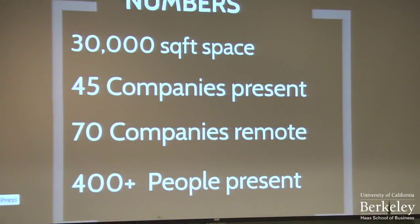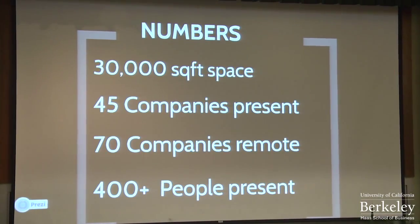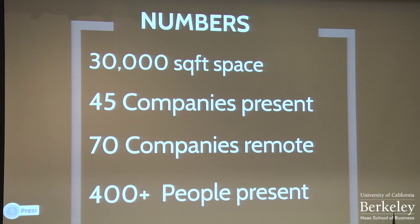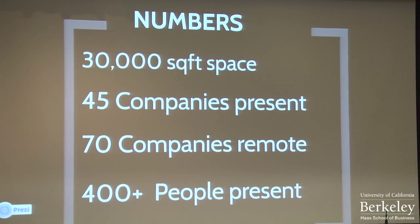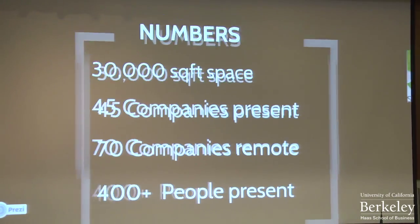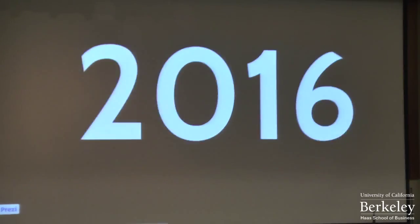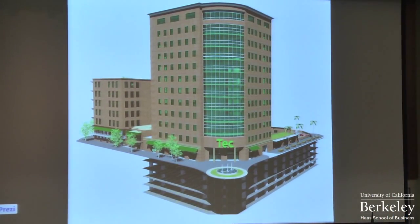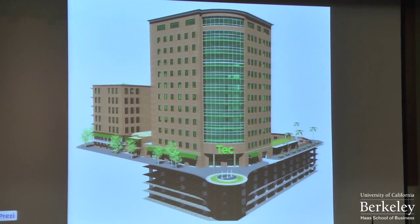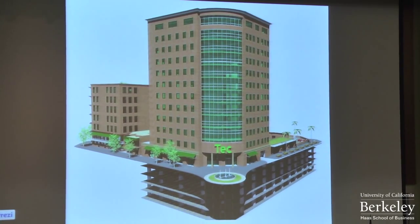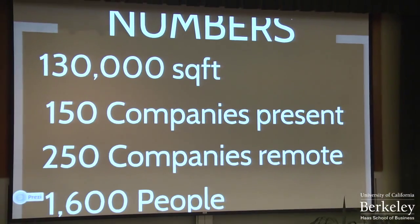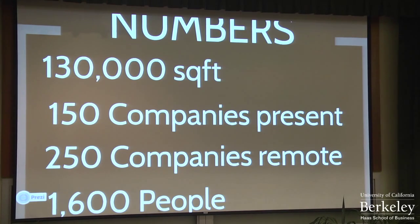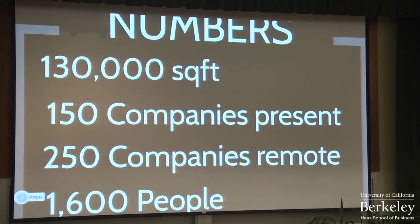Right now we have about 30,000 square feet, about 45 companies in the building doing some great stuff. There are about 70 remote companies that come for meetings and events, and we have about 400 people in the building — all 20- to 30-year-old software developers. In 2016 we're going for phase two because the building is absolutely full, and we're looking at building three times the size. We hope to start that by the end of the year — looking at 130,000 square feet, 150 companies, 250 remote, and 1,600 people.